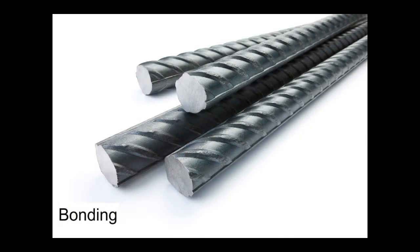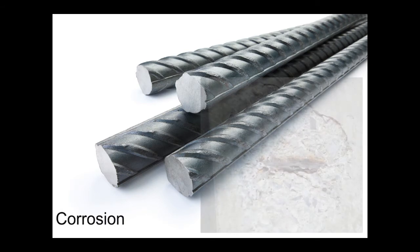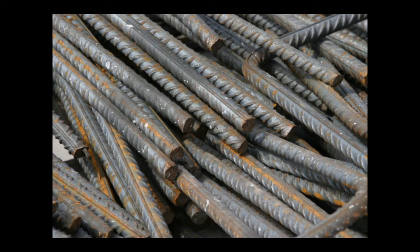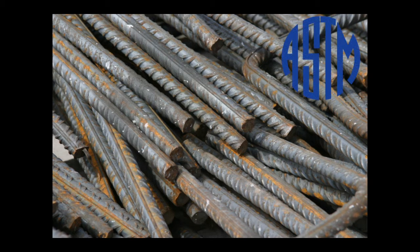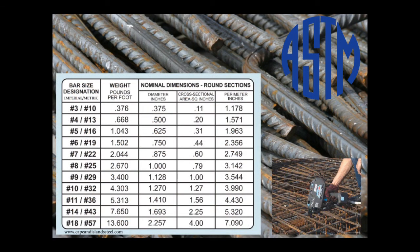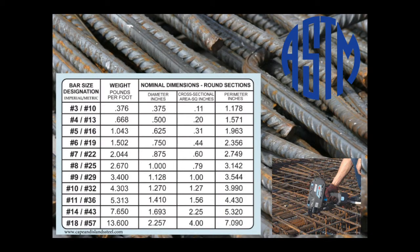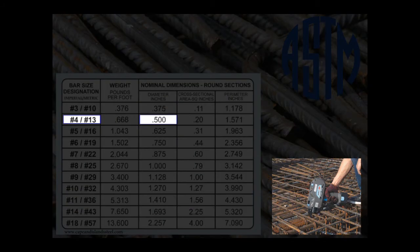However, one problem that steel rebar can encounter over time is corrosion. Once the concrete is hardened fully, an alkaline environment is formed, which helps make the steel much more resistant to corrosion. The yield strength of steel reinforcing bars depends on the grade and its composition. The American Society for Testing and Materials, ASTM, has created a standard identification ruling that all rebars must comply with. Eleven standard sizes of reinforcing bars are in use today. In the imperial system, they range from number three bars to number 18. These sizes refer to the fraction of an eighth of an inch in diameter of the bar. For example, a number four bar has a diameter of four-eighths, or one-half of an inch.